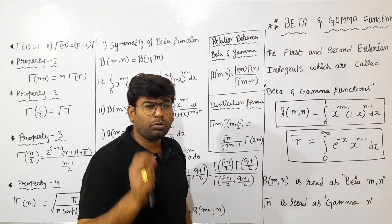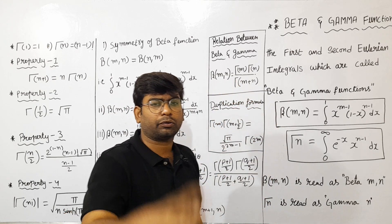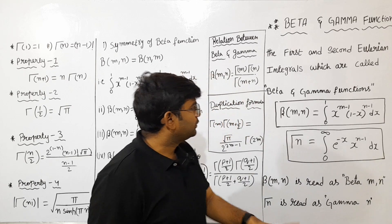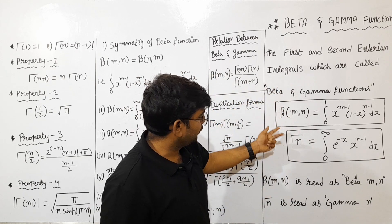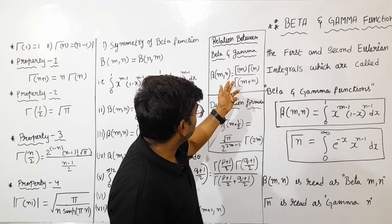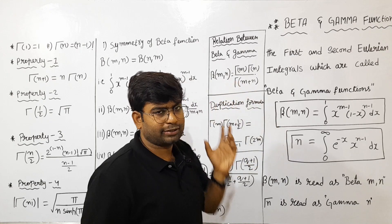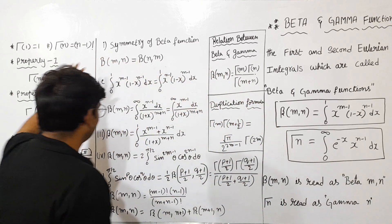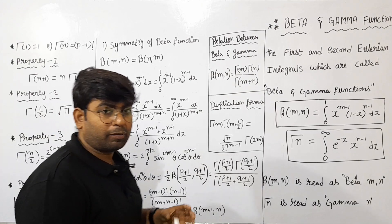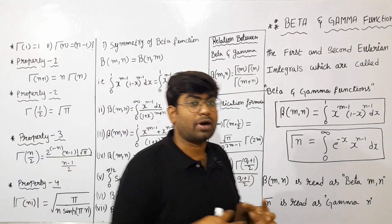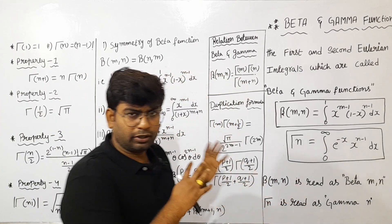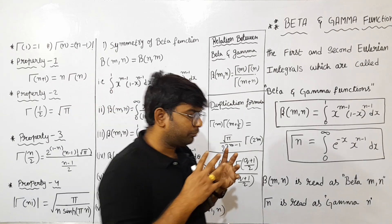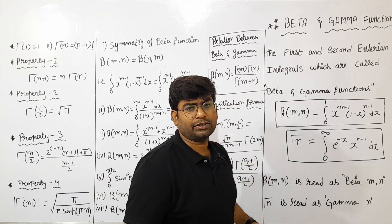The most important relationship between Beta and Gamma gives you two formulas. We have marks for these formulas, so you have to know these formulas and properties. It is a very important difference, okay?